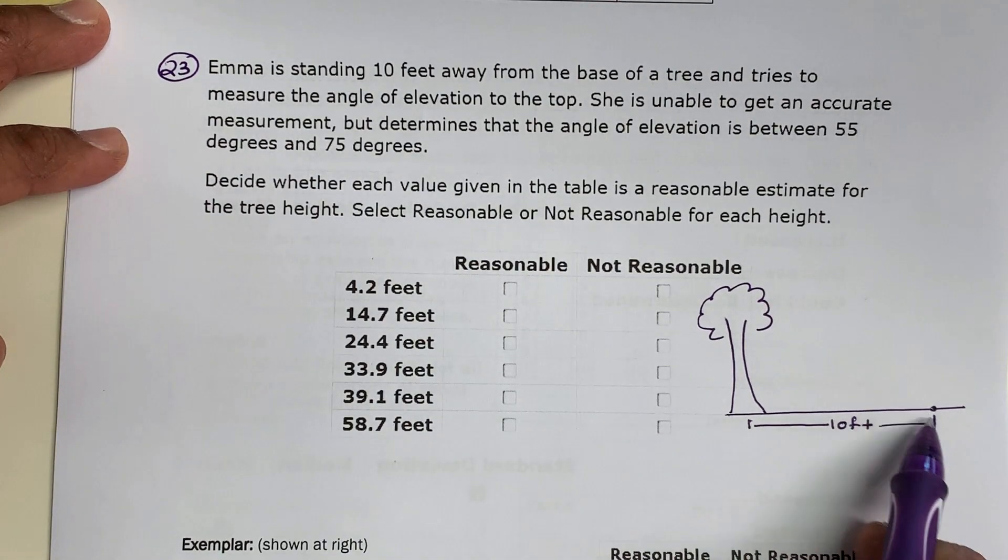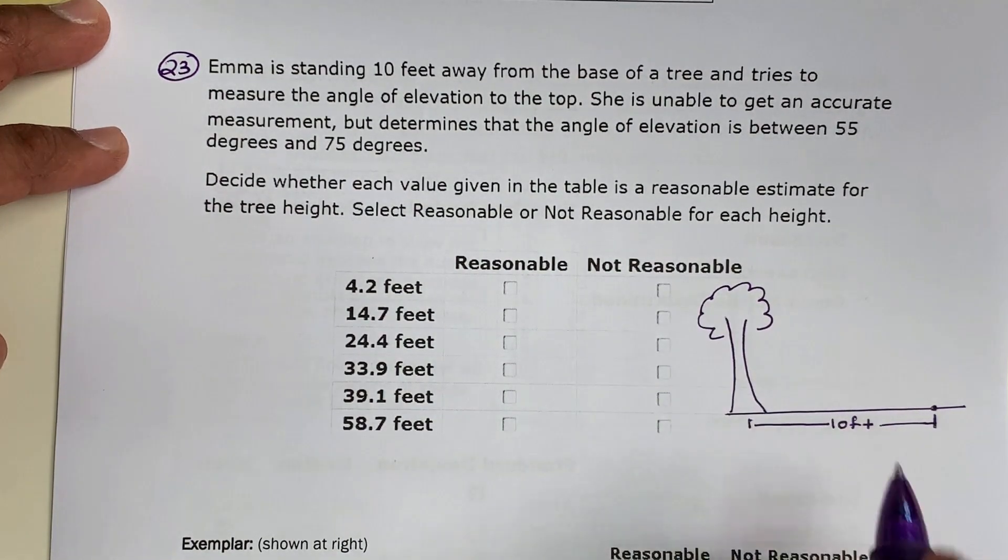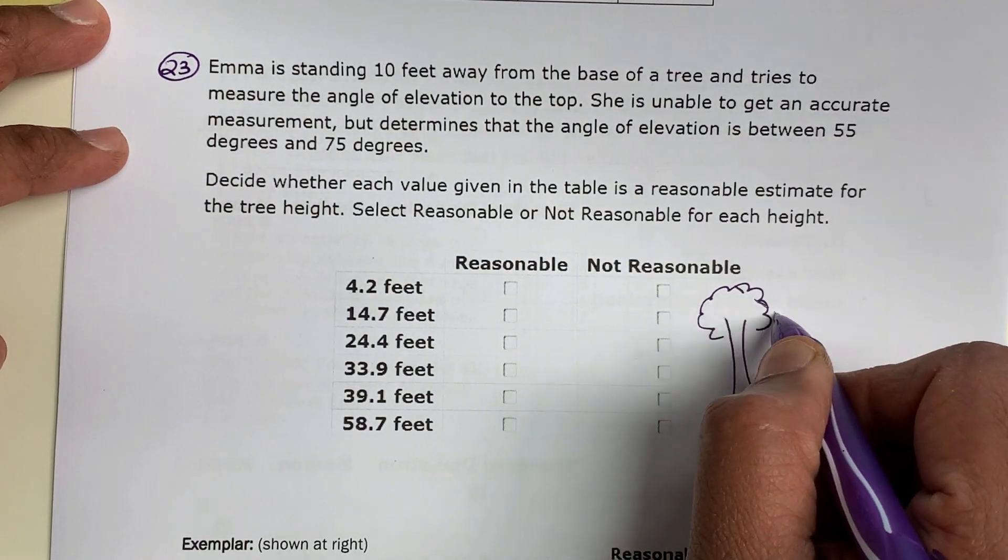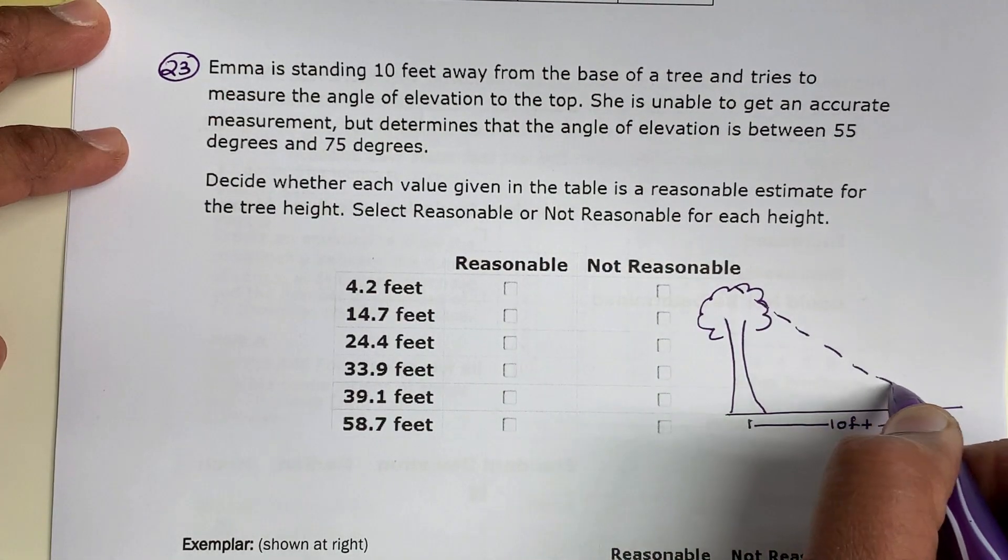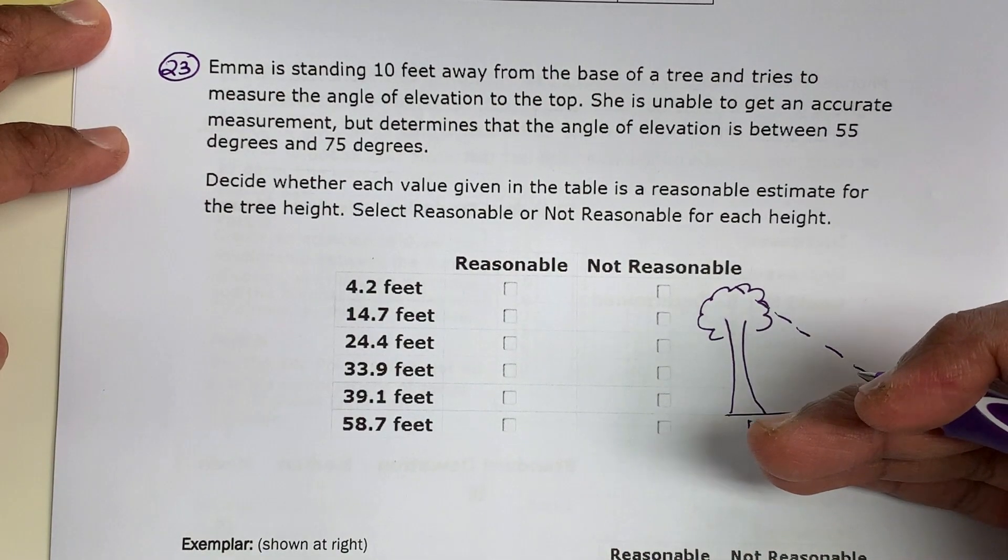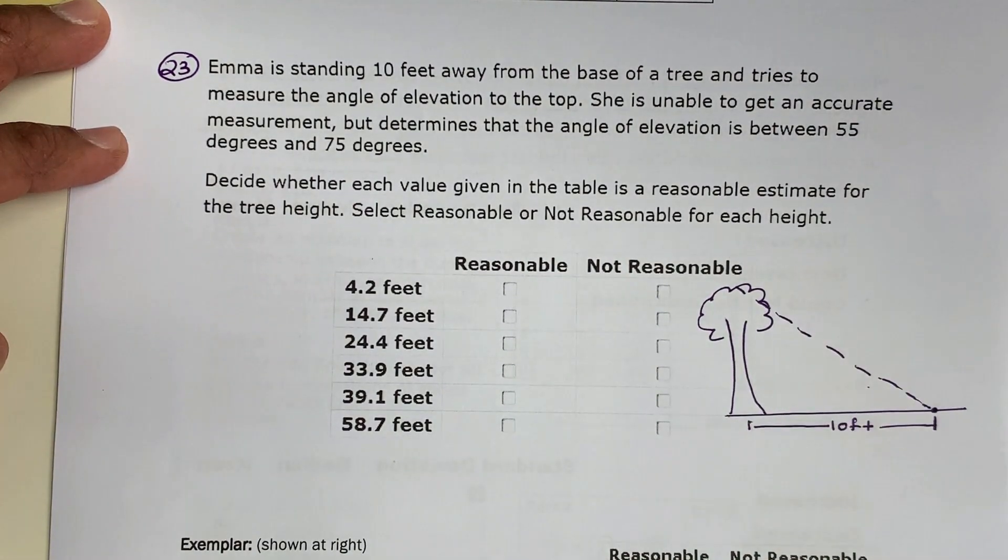She takes angle of elevation to the top of the tree. Remember, angle of elevation starts horizontally and you're just looking up.